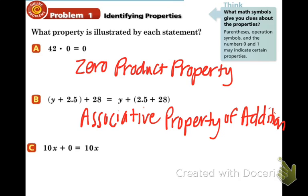And the last thing, part C, we have 10x plus zero equals 10x. Did the value change at all? No. So that means we have an identity property. And are we multiplying or are we adding? We're adding, so identity property of addition.